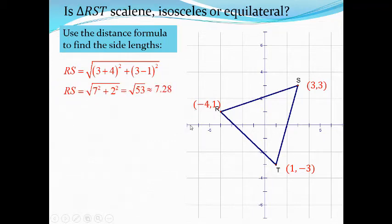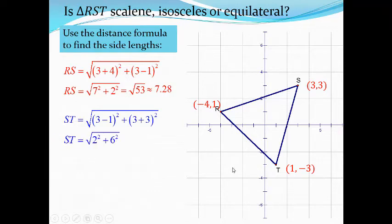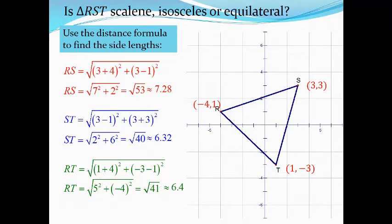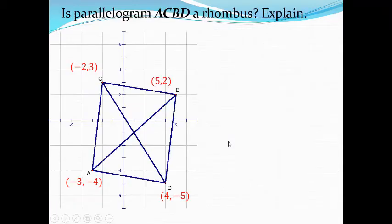Using the same formula, the length of ST equals the square root of 40, or about 6.32. The length of the third side RT, using the distance formula, equals the square root of 41, or about 6.4. Since the three sides all have different lengths, the triangle is a scalene triangle.